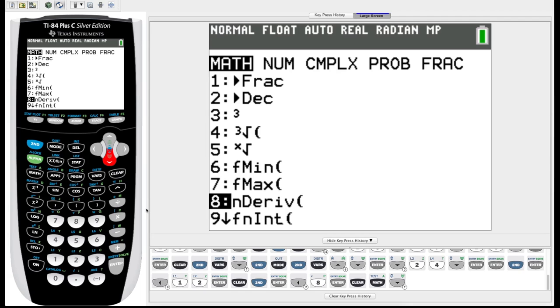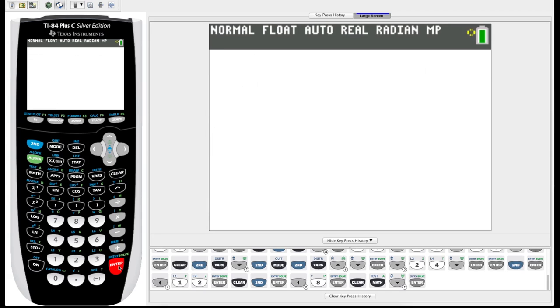So we'll start with a numerical derivative. If we hit number 8 here, it shows us it has three blank spaces that we need to fill in, or four actually. So it says d/d blank—the variable that we need to differentiate with respect to. We'll choose x. Next to your alpha key, you have the variable button, so d/dx.